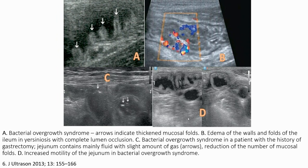This is a case of bacterial overgrowth syndrome. Image A indicates dilated mucosal folds. Image B shows edema of the wall and folds of the ileum with complete lumen occlusion. In the same syndrome in a patient with a history of gastrectomy, the jejunum contains mainly fluid with a slight amount of gas and reduction in the number of mucosal folds.